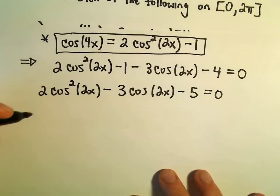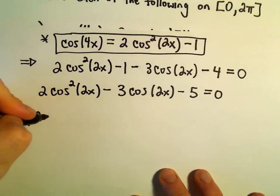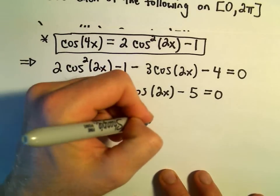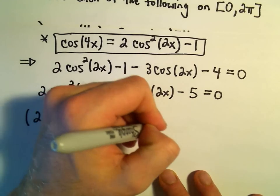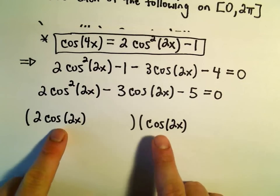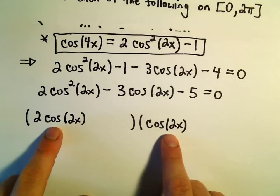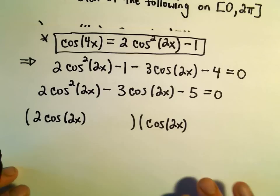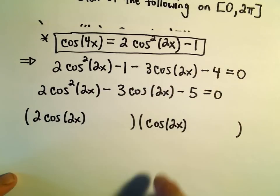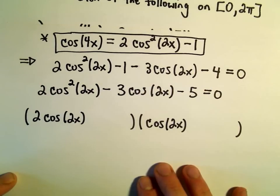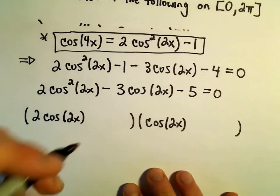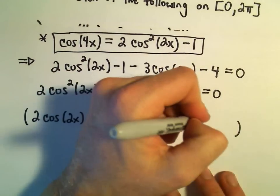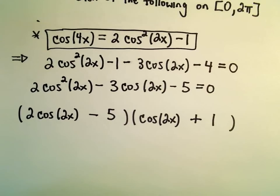Let's see if we can't get this to factor a little bit. So I'm going to have a 2 cosine of 2x. And then I'm going to have another cosine of 2x. Because when I distribute these out, I'll get my 2 cosine of 2x times cosine of 2x will give me my cosine squared. Let's see. So I need numbers on the outside. They have to multiply to 5. But somehow I'm going to have to get a negative 3 in the middle.